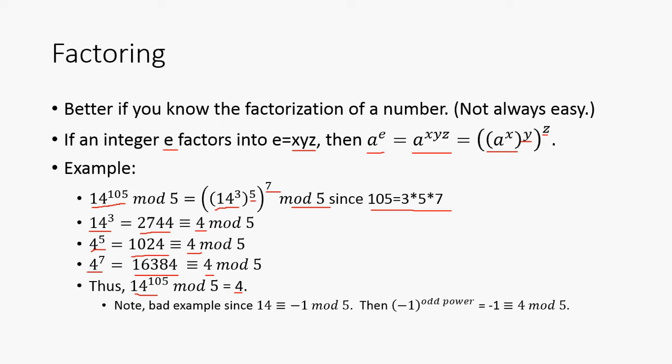And note that this is not really the best example, since 14 is equivalent to negative 1, right? So negative 1 to an odd power is going to be negative 1. And also, you could also consider negative 1 to an even power is just going to be 1. So kind of a bad example, but it's also a shortcut that you can know. And you'll see some of these patterns arise as you do more of these.